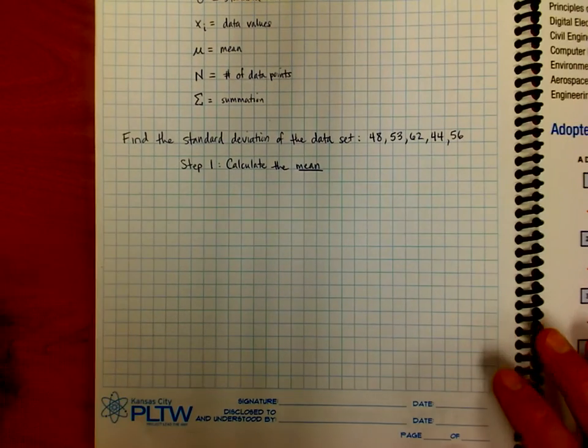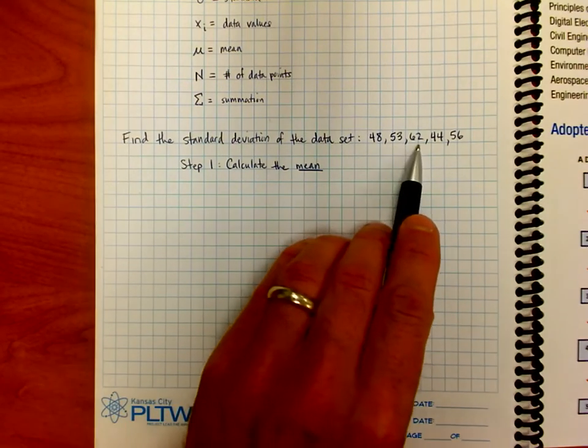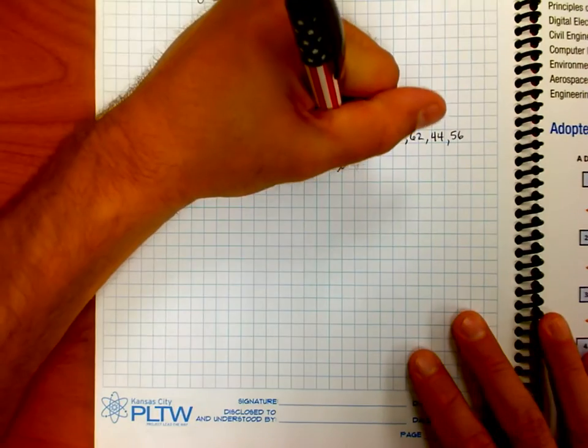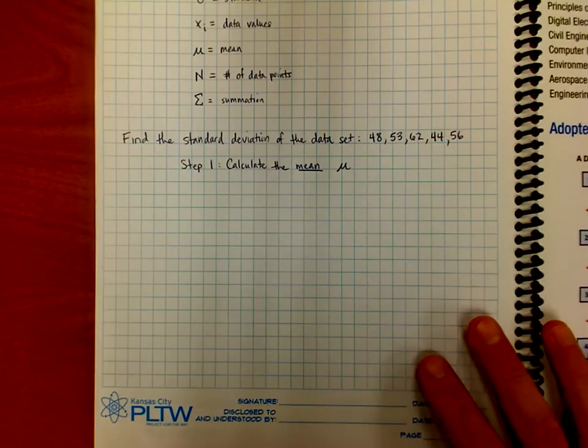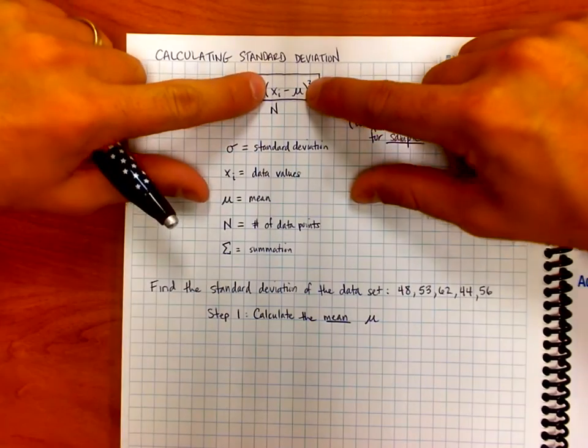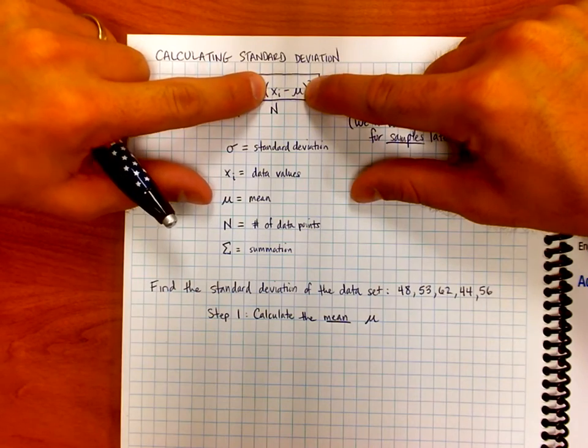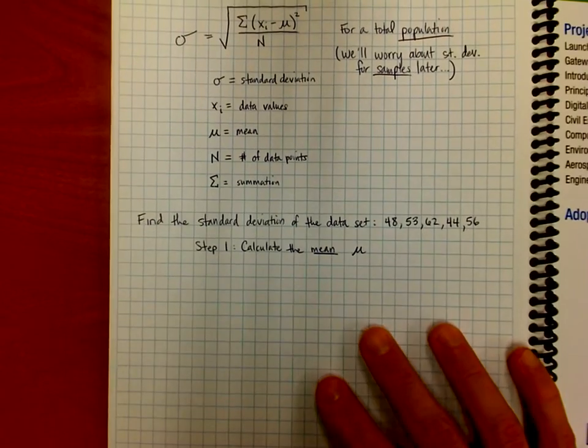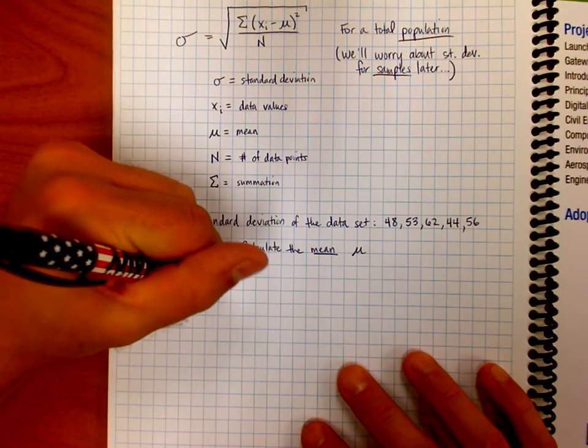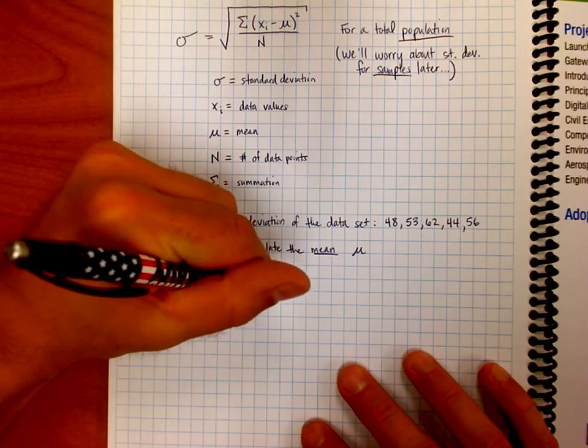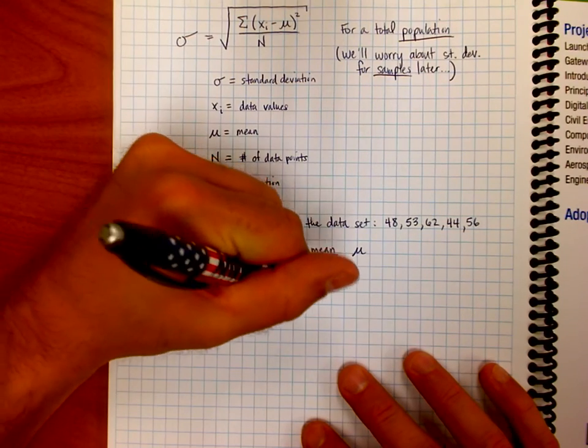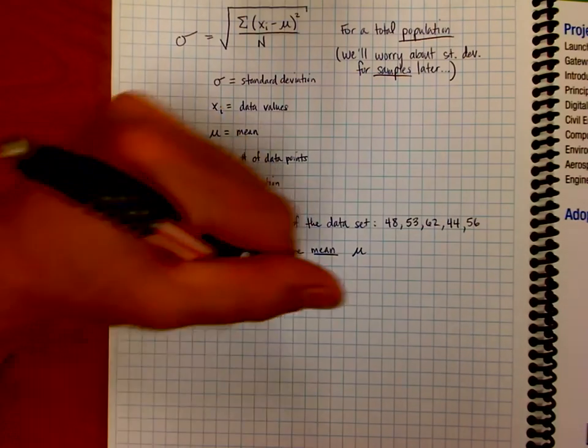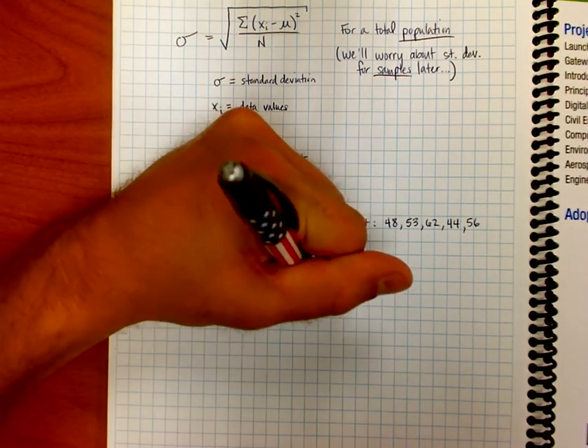Let's say we want to find the standard deviation of the data set 48, 53, 62, 44, and 56. My first step is to calculate the mean. That again, that's this symbol on the formula sheet. Why? Because eventually I'm going to need to take every single one of the five values that I have here and subtract the mean from it. So the mean μ, I can find by taking 48 plus 53 plus 62 plus 44 plus 56. I'm going to take all of those five values, I'm going to add them up and I'm going to divide by five.